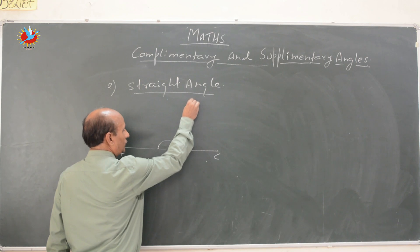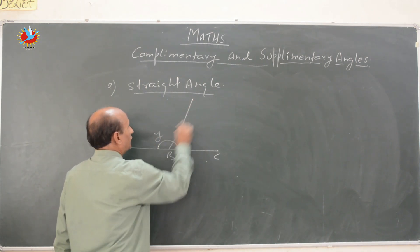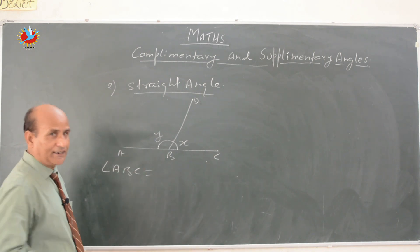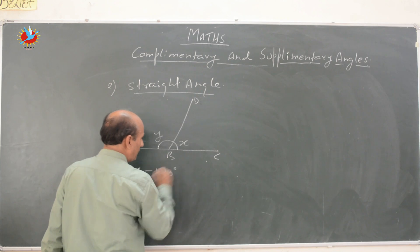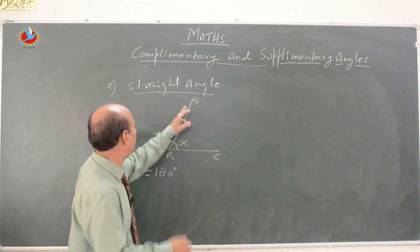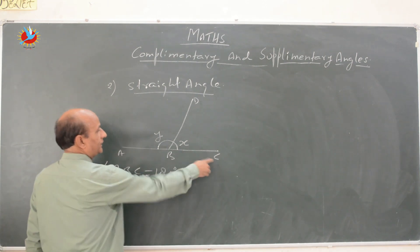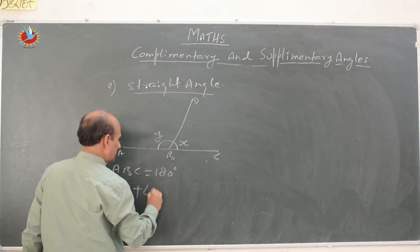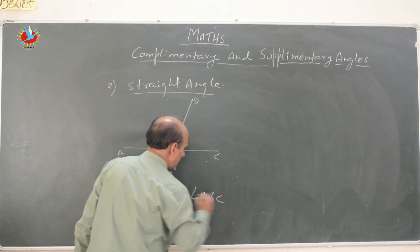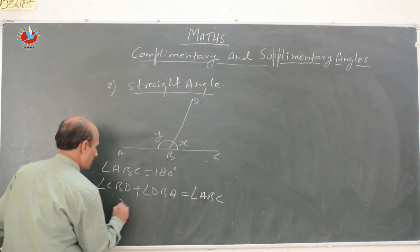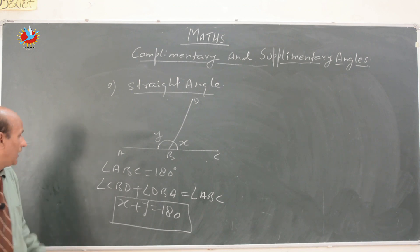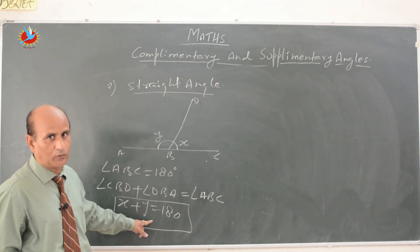Let us divide the straight angle into two parts: X and Y. Angle ABC is a straight angle — 180 degrees. We divided it into two parts: angle CBD plus angle DBA equals angle ABC. So CBD is X, DBA is Y, and ABC is 180 degrees. If we divide a straight angle into two parts, the sum of the parts must equal 180 degrees.